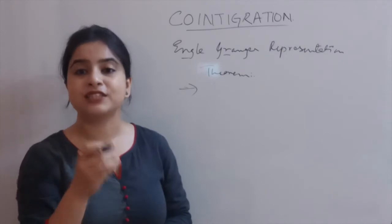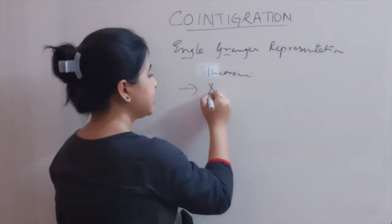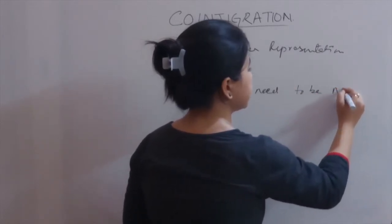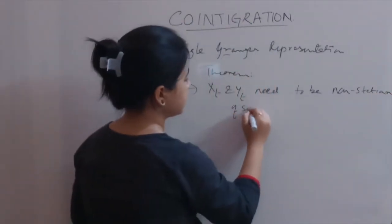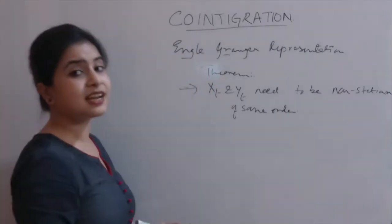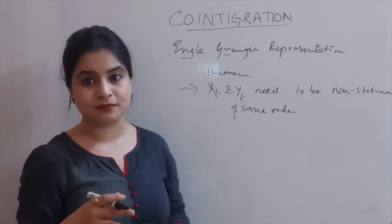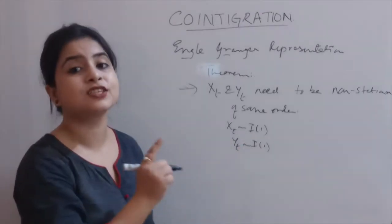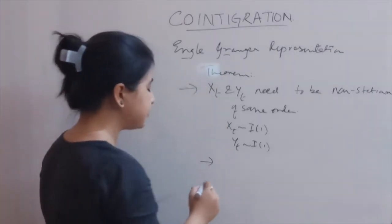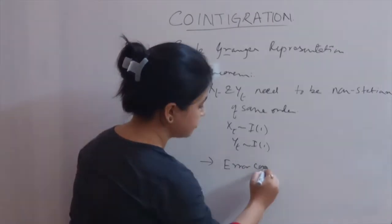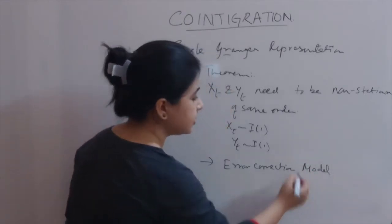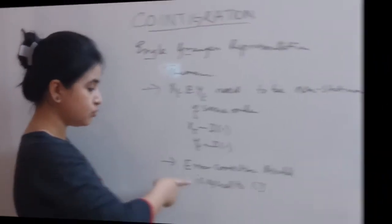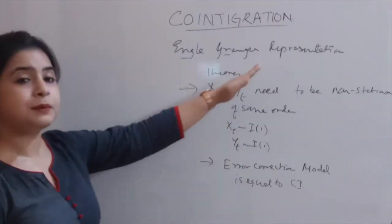The highlights of the Engle-Granger Representation Theorem are as follows. First, they provided a necessary condition for the existence of co-integration: xt and yt need to be non-stationary of the same order, meaning the number of unit roots each contains must be equal. For example, if xt is integrated of order 1, then yt must also be integrated of order 1. Second, they proved that the error correction model is equivalent to co-integration.